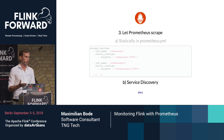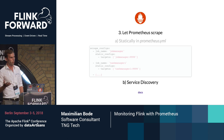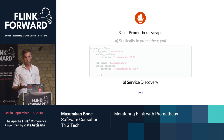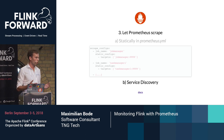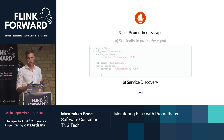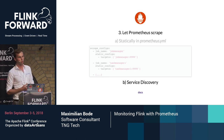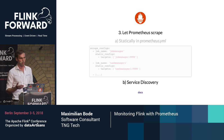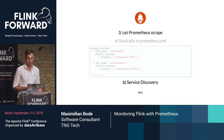The Flink metric system has a lot of metrics already available to you — those are the built-in metrics. For example, how many bytes or records are going into a given operator or coming out of it, information about watermarks, checkpoint sizes, checkpoint duration. Also most connectors like Kinesis or Kafka expose metrics relevant to them, such as offsets.